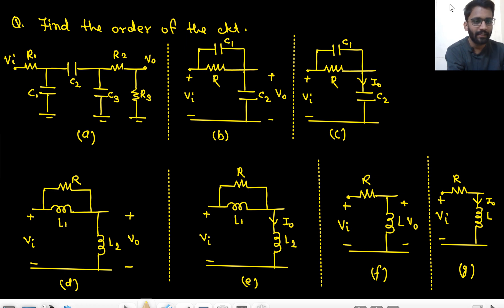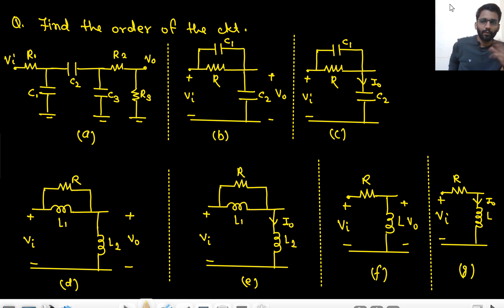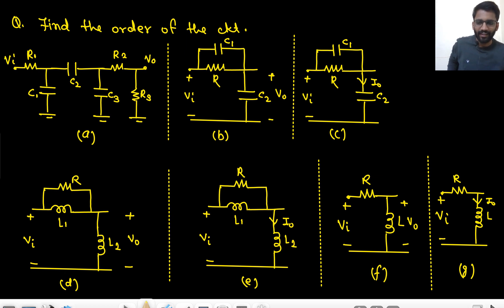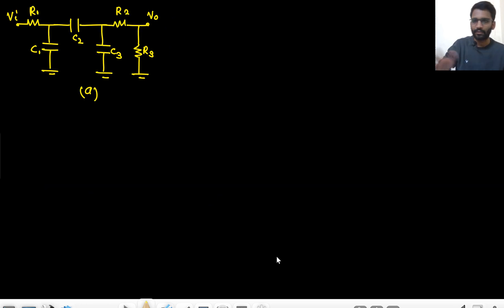Hello everyone. Today we will see a very simple but interesting analysis. There are seven circuits in front of you. You need to find the order of all the circuits with respect to the given output — first has voltage output, second voltage output, third current output, and so on through seventh. Just don't skip the video — I know many of you will think this is a very simple problem, but there is something interesting, so just hold on.